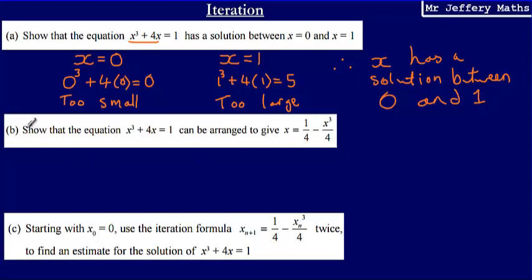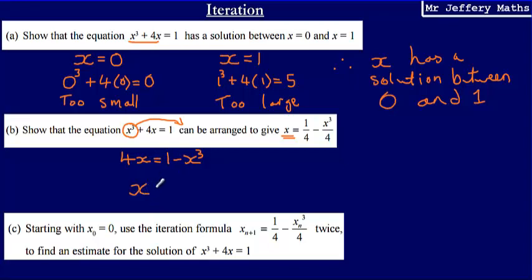Now x cubed plus 4x equals 1 can be rearranged to give x equals one quarter minus x cubed over 4. Starting with x cubed plus 4x equals 1 and wanting x on its own, we subtract x cubed from both sides, leaving 4x equals 1 minus x cubed. Then dividing both sides by 4 gives x equals 1 minus x cubed over 4.